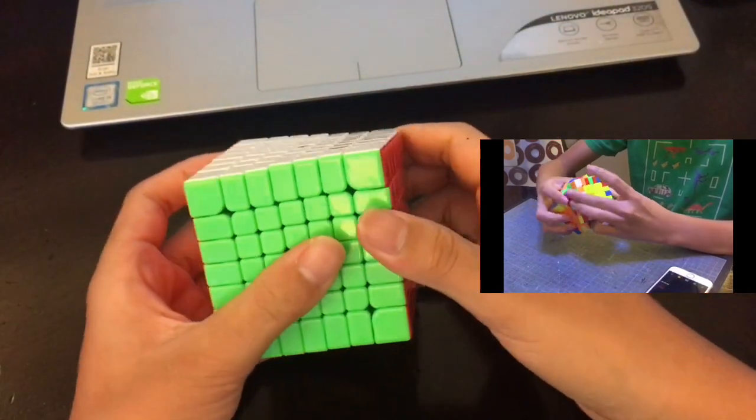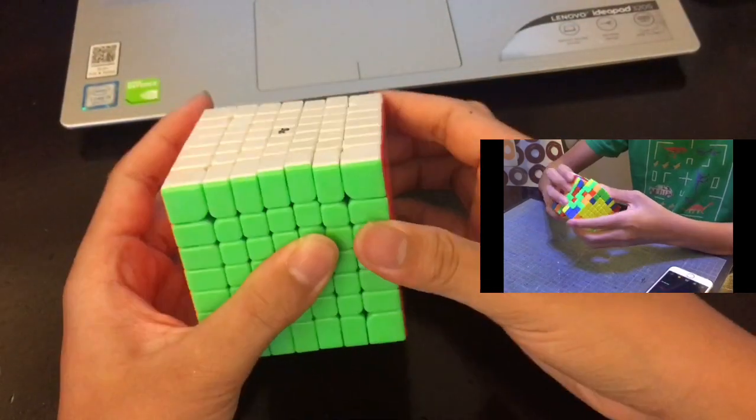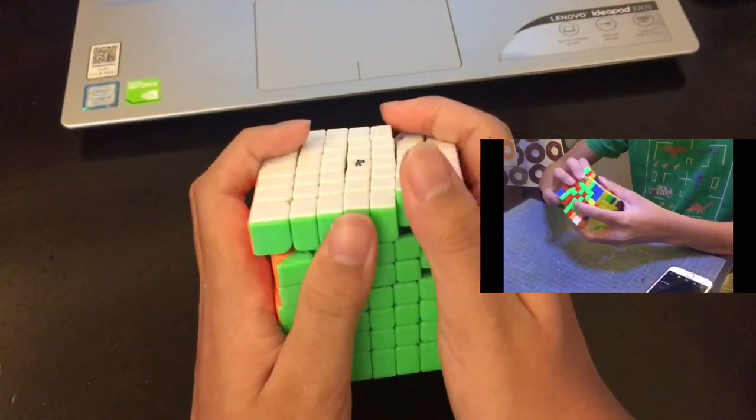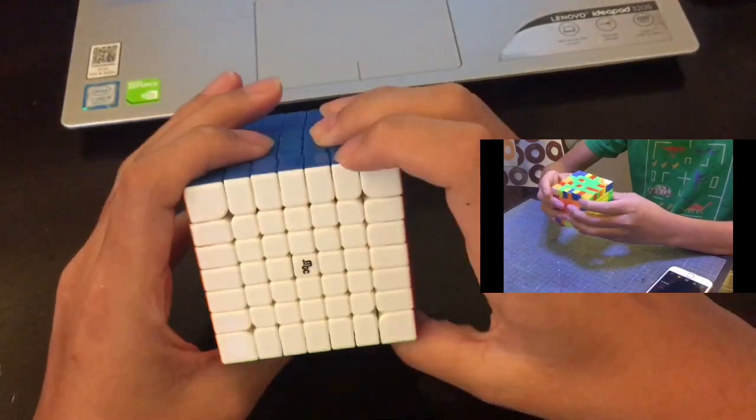For the outer layers, it cuts about one and a half cubies, but more than that, it just locks up and sometimes it pops, and it's annoying. So don't try to corner cut more than that.